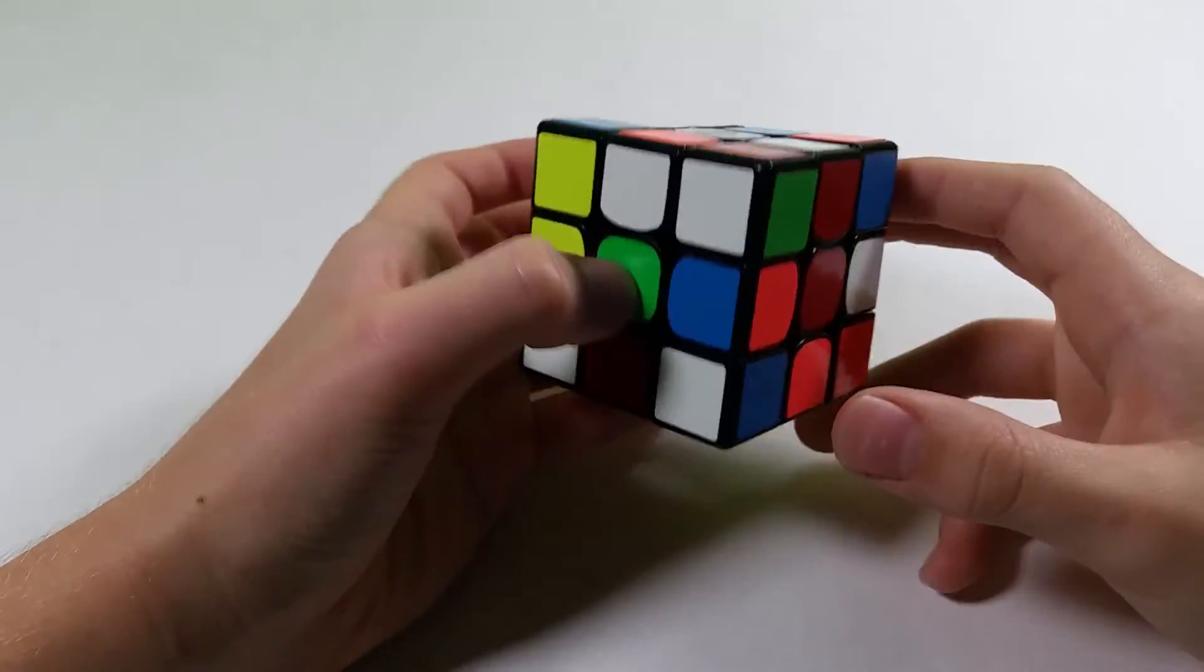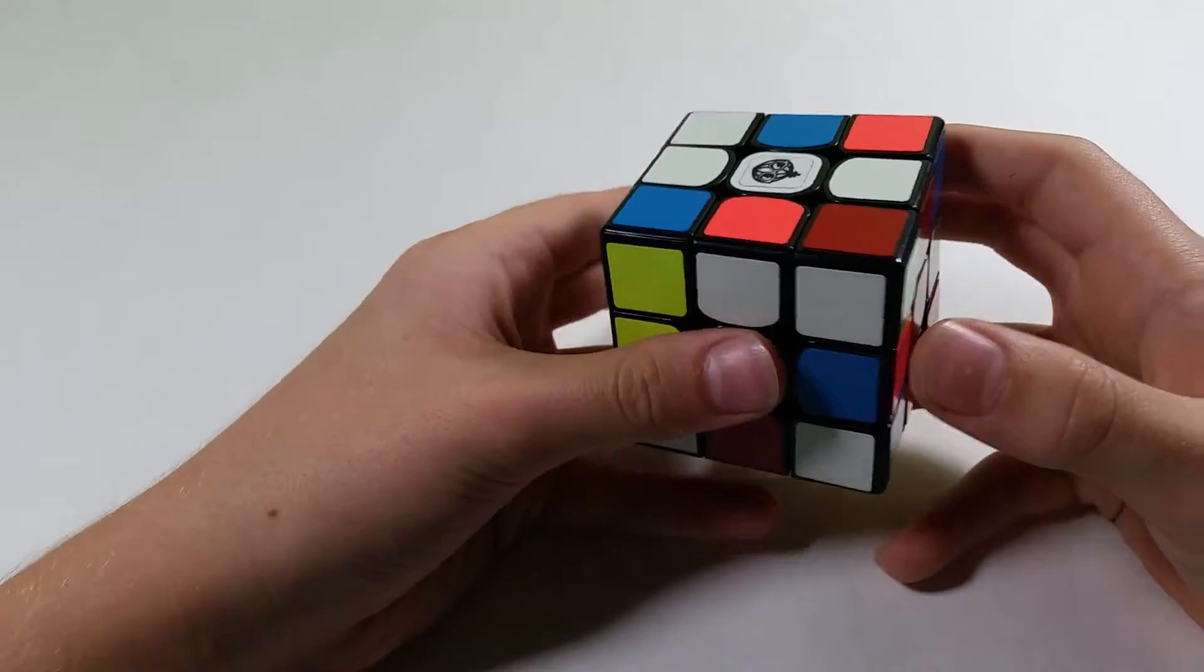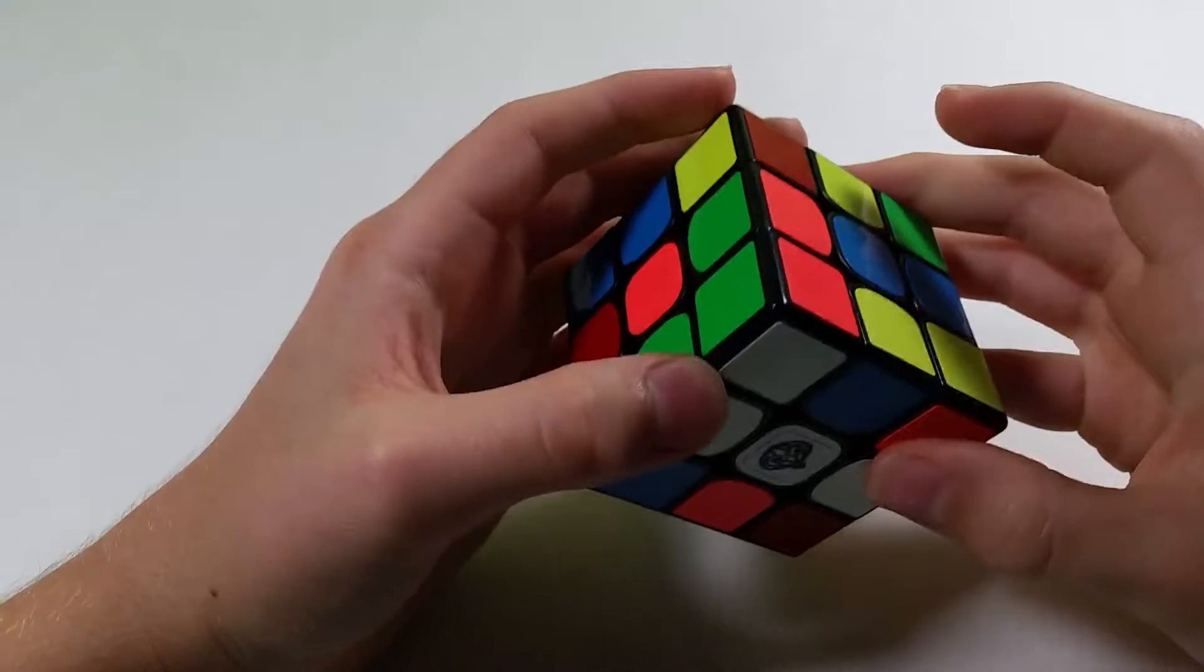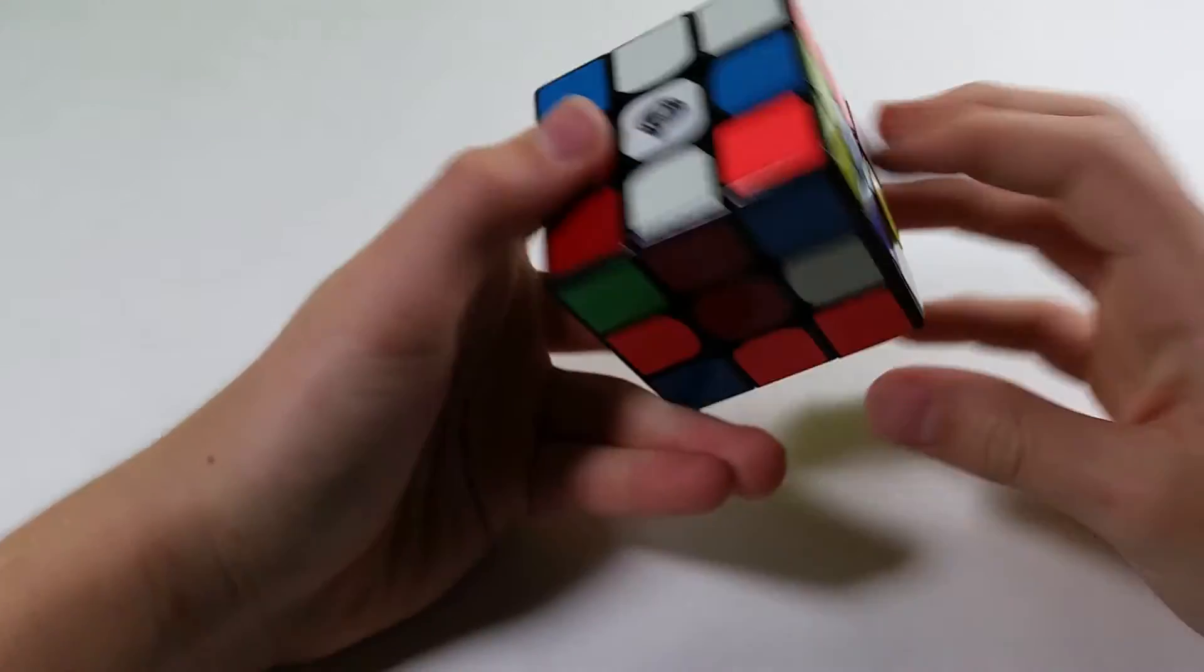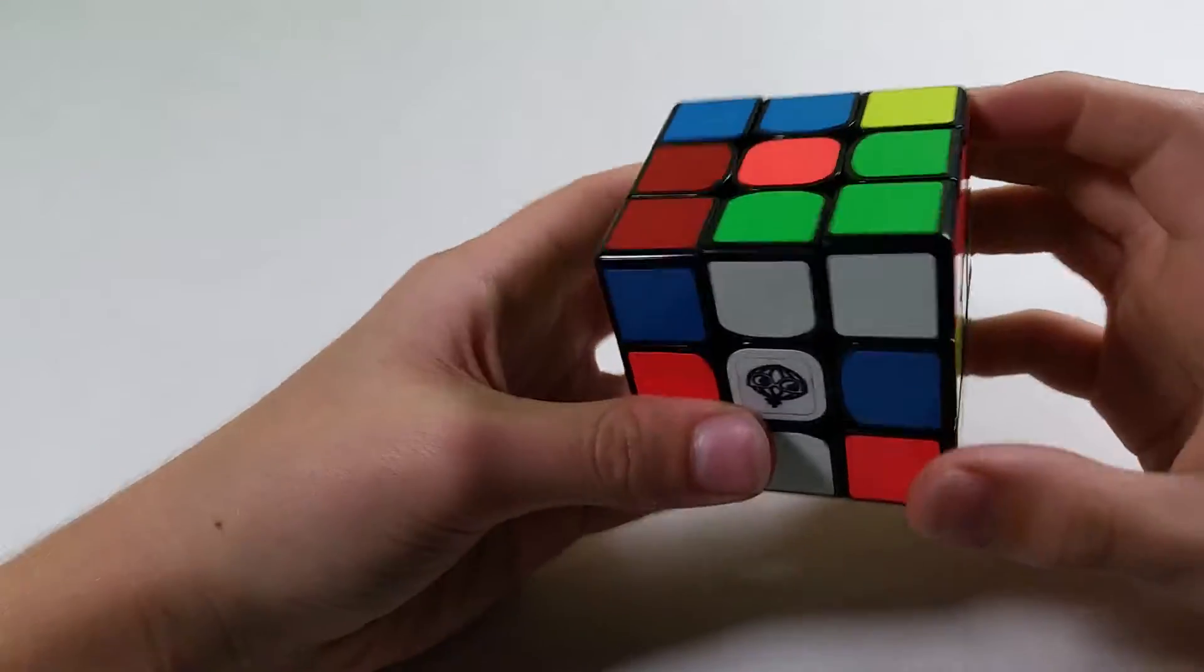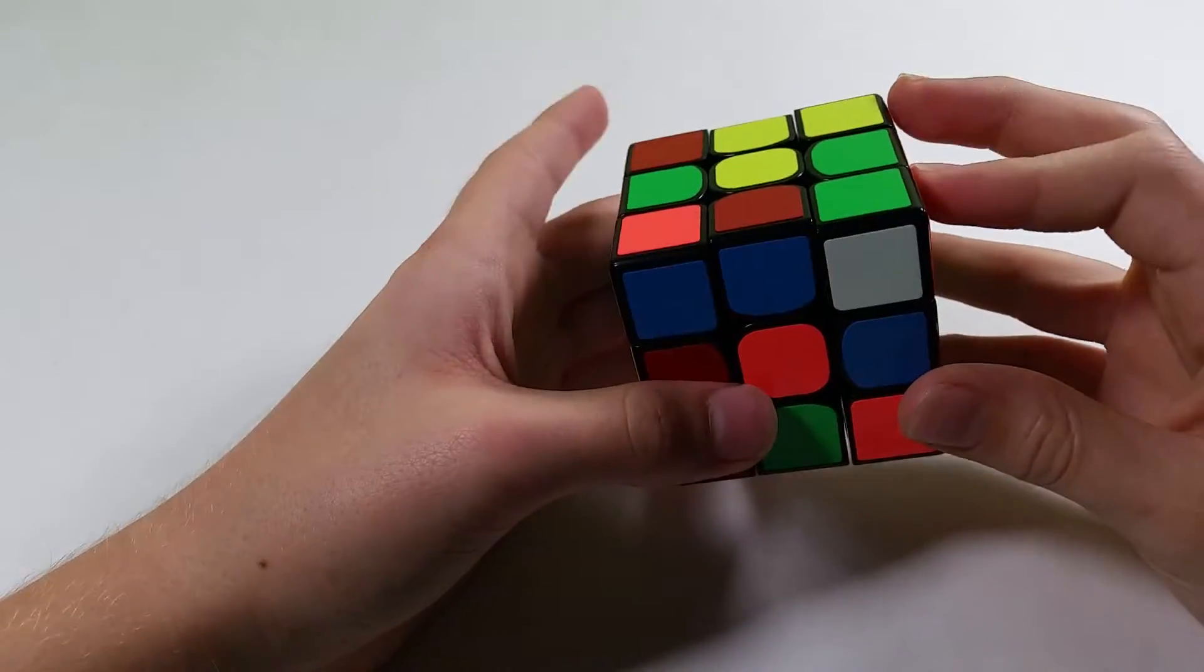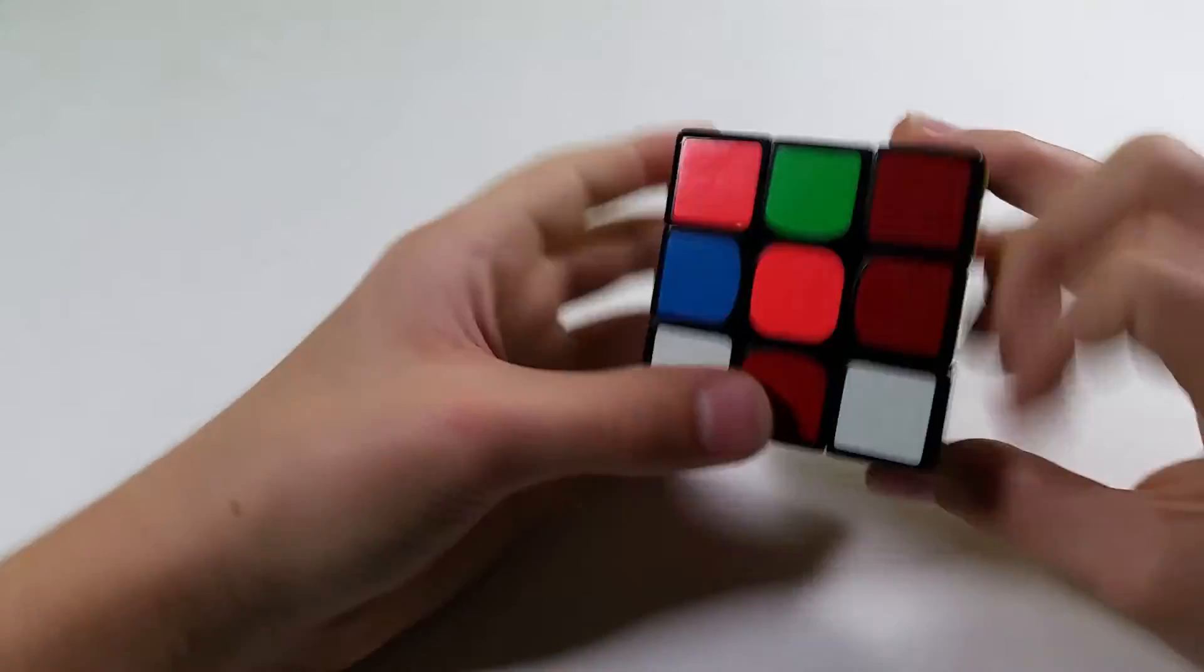Looking at this first scramble, white cross looks pretty easy. I see I have an edge here, here, here, and over here, and then I also have this pre-made F2L pair. So I bring in this blue edge with an R, and then in order to preserve this pair, I would do a U' F2.